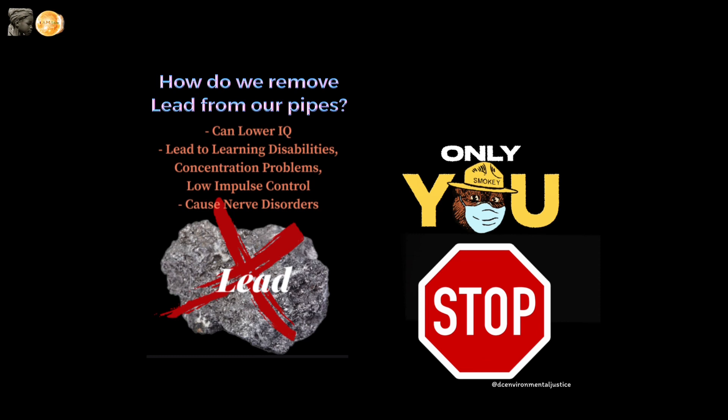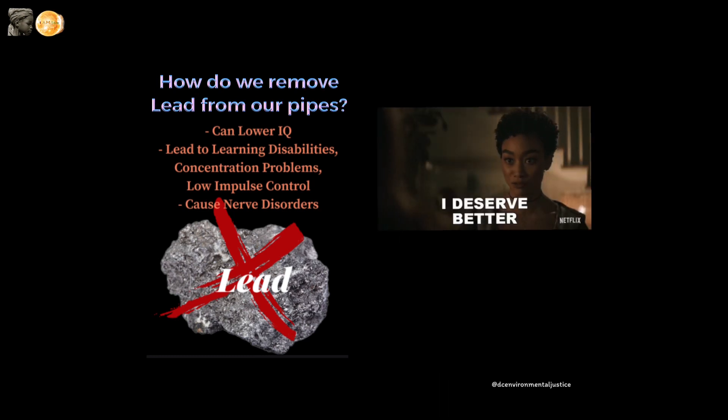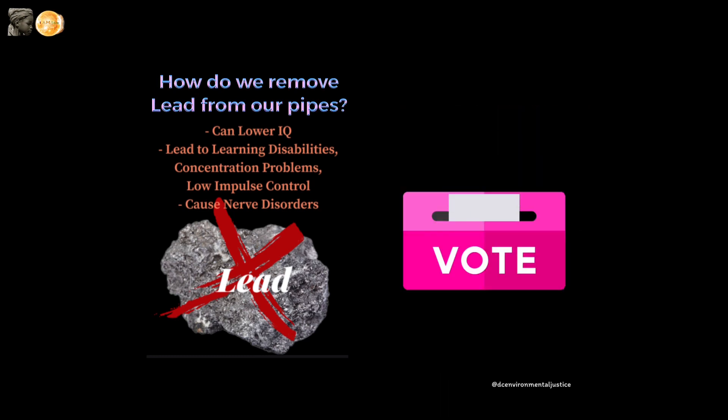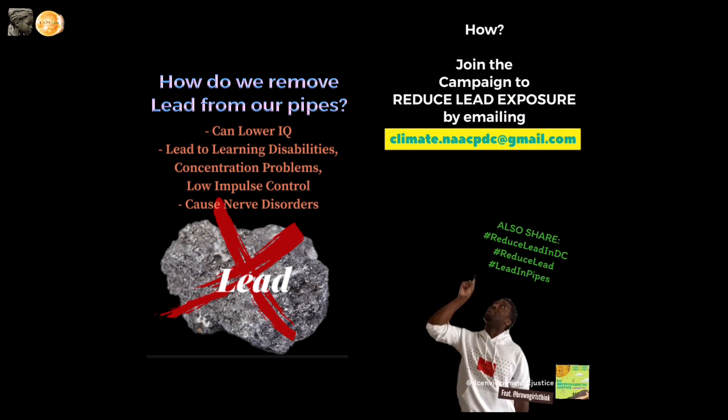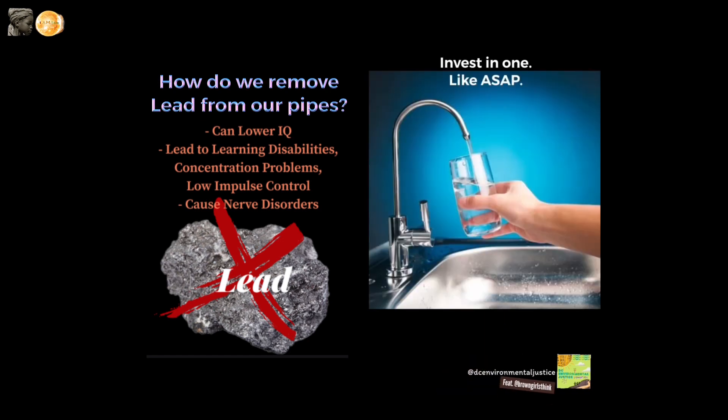But you have the ability to stop it by demanding better, only voting for politicians with a proven track record of putting your health and well-being first. Also getting with a coalition of folks who will help you keep the ones you did vote in accountable to your health. Oh, and get yourself a filter.